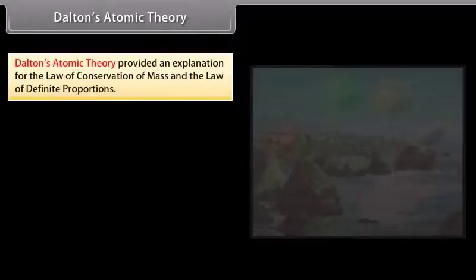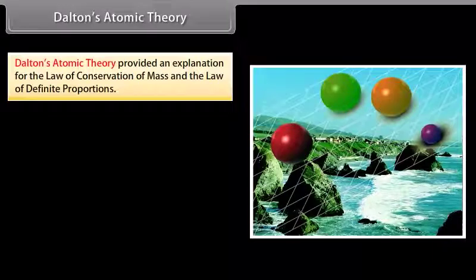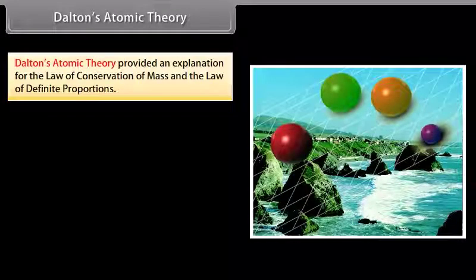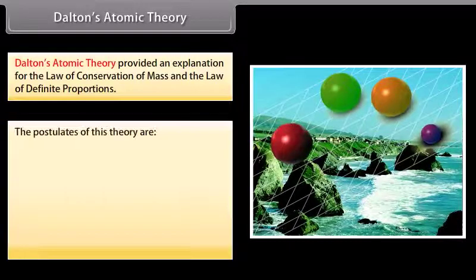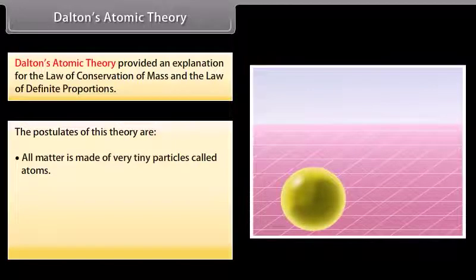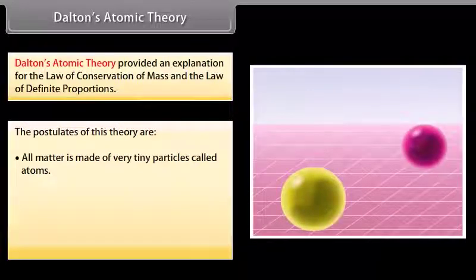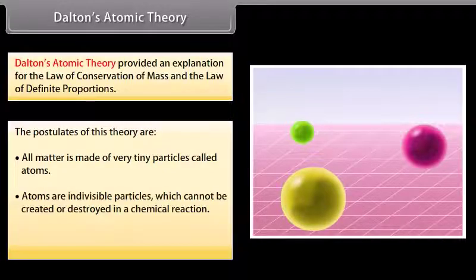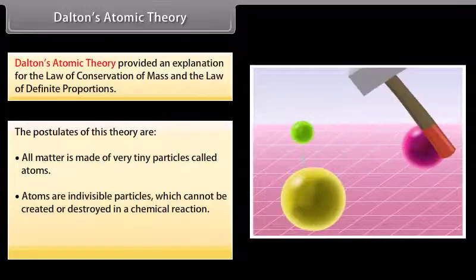Dalton's atomic theory. Dalton's atomic theory provided an explanation for the law of conservation of mass and the law of definite proportions. The postulates of this theory are: 1. All matter is made of very tiny particles called atoms. 2. Atoms are indivisible particles which cannot be created or destroyed in a chemical reaction.